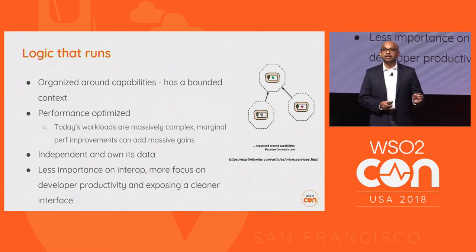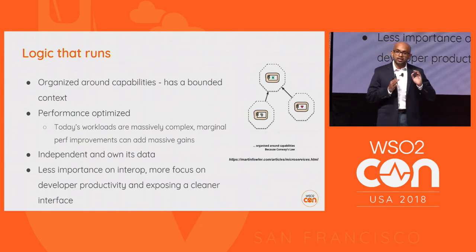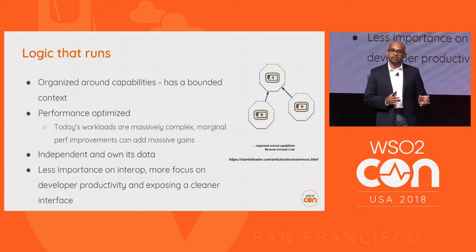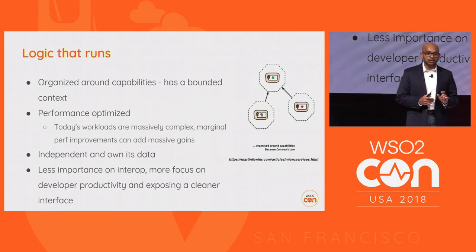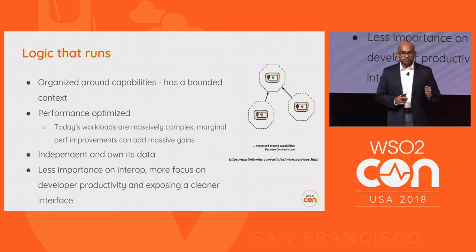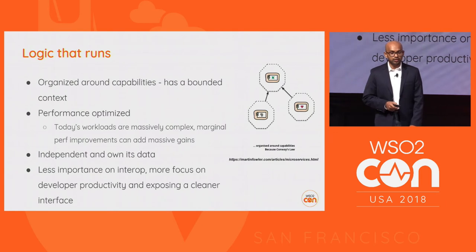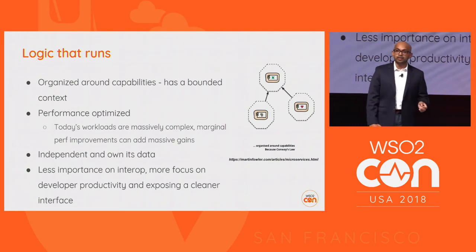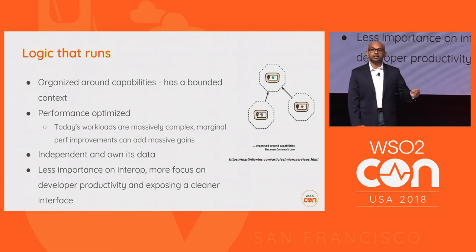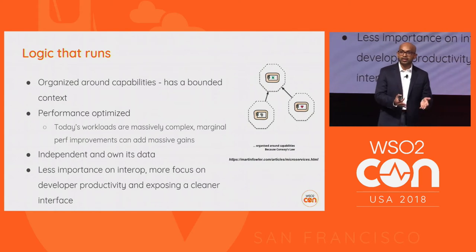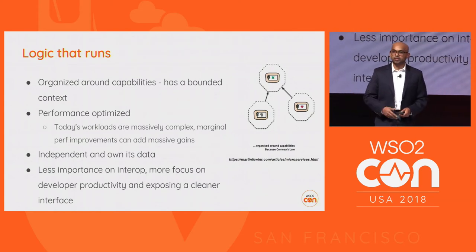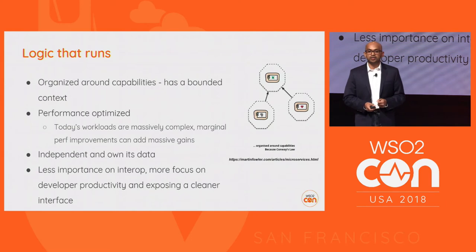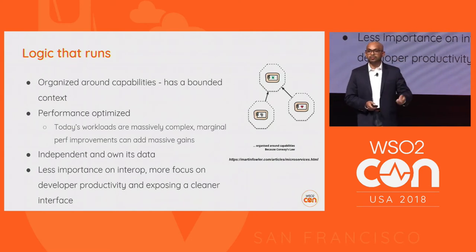Less importance on interoperability — this is where we deviate from service-oriented architecture. SOA talked a lot about interoperability, that's why the standards were really important. But today, less importance on interoperability and more importance on agility and developer productivity. Today you should empower the developer: if that person is good in Java, they should write their microservice in Java; if they're good in Ballerina, write it in Ballerina — Go, Python, whatever. Then you can release an MVP of a product very soon, hook it up to an API platform and expose those capabilities.